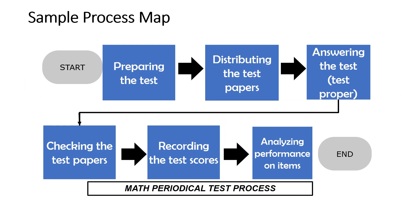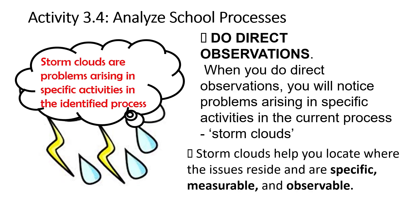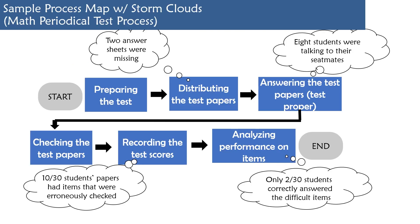A sample process map starts with preparing the test, then distributing the test papers, answering the test paper, checking the papers, recording the test scores, and then analyzing the performance on items. To analyze the school process, do direct observations — you will notice problems arising in specific activities in the current process. You may call them storm clouds. Storm clouds help you locate where issues reside and are specific, measurable, and observable. Storm clouds are problems arising in specific activities in the identified process.